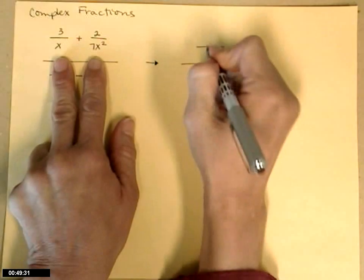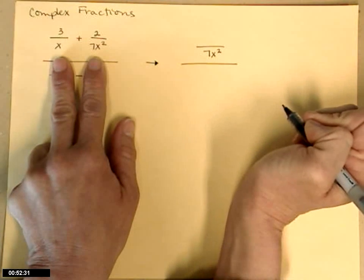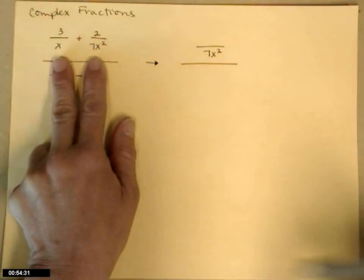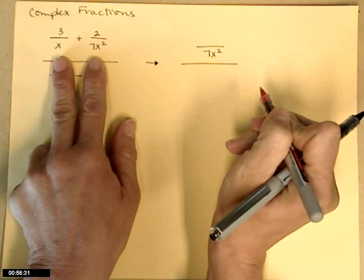So the common denominator would be 7x squared. Then you're going to go through and build up each fraction in the top to have that denominator.